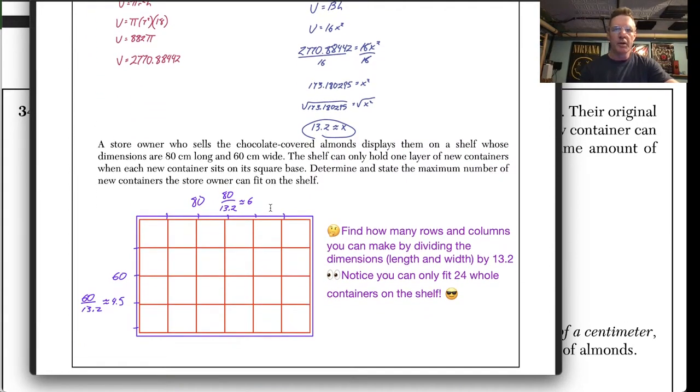This part here I wanted to show you because the store owner who sells these chocolate covered almonds displays them on a shelf whose measures are 80 by 60. The shelf can only hold one layer of new containers when each new container sits on its square base. Determine and state the maximum number of new containers the store owner can fit on the shelf. So a lot of us were actually calculating the area of this and dividing it by the area of the square, which is 173.18.